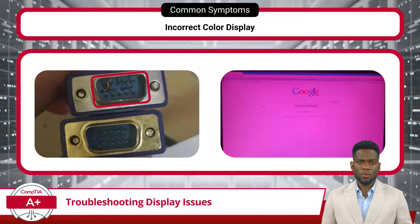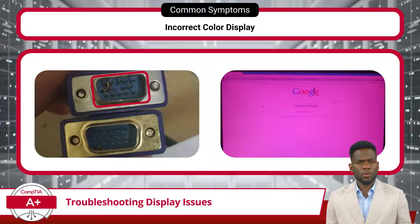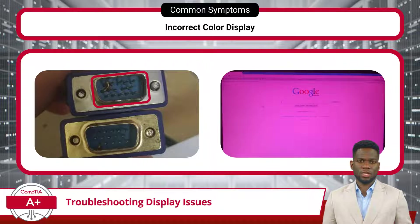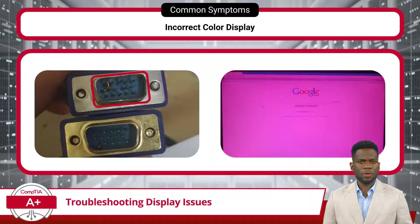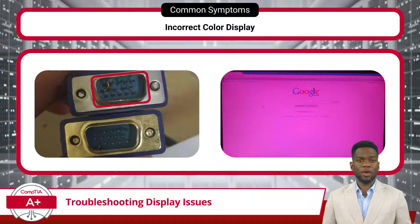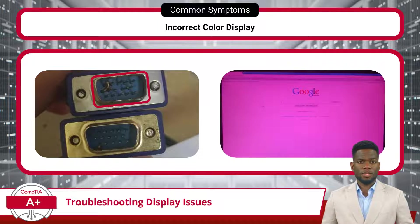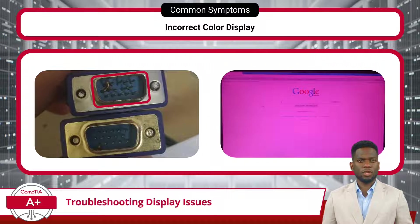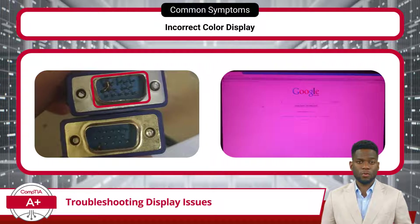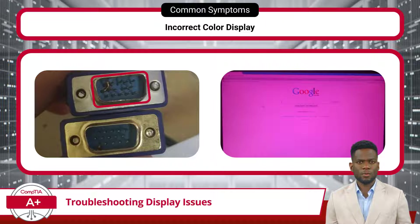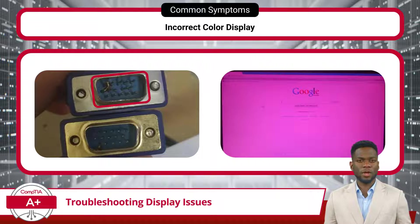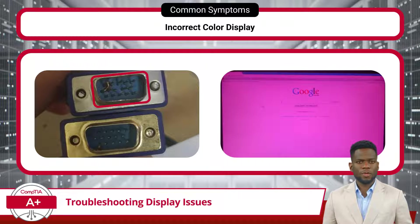If you have a display with distorted, washed-out, or inaccurate colors, you might want to check for a faulty cable. If cables such as HDMI or VGA suffer damage, it can result in signal degradation or interference, leading to color distortion or imbalance. Users should regularly inspect cables for signs of wear, fraying, or damaged connector pins. In addition, misconfigured color settings — such as brightness, contrast, hue, and saturation — on the display or source device can also lead to incorrect color display. Hardware issues such as malfunctioning components can further cause incorrect color display, especially in LCD displays where specific areas may become noticeably affected.